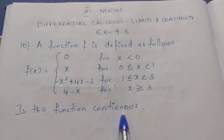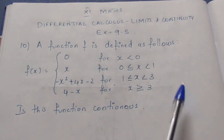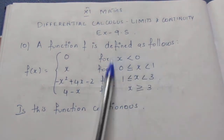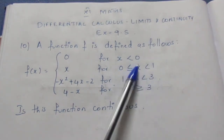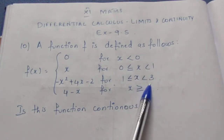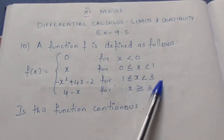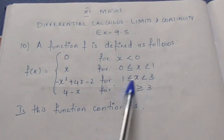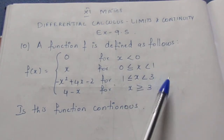We need to check whether the function is continuous. The critical points where the function definition changes are x equals 0, x equals 1, and x equals 3. So we will check continuity at these three points.